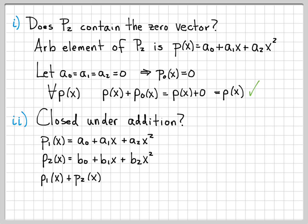Let's see what happens when I add them together. So P₁(x)+P₂(x) is obviously equal to (a₀+b₀)+(a₁+b₁)x+(a₂+b₂)x².